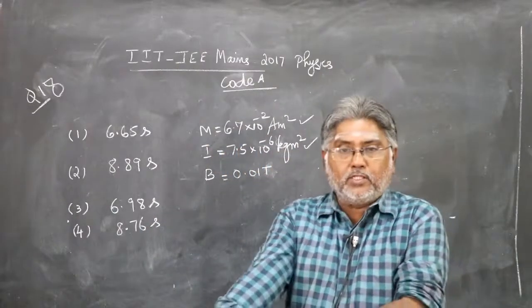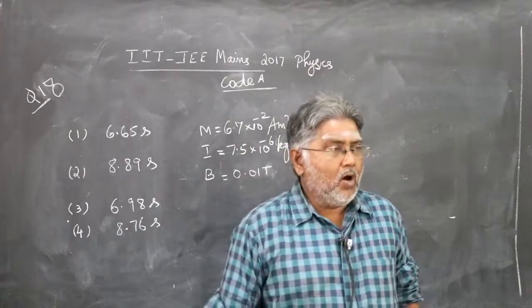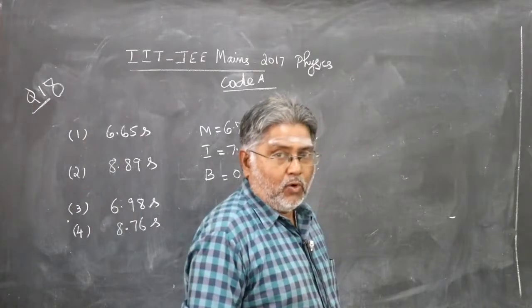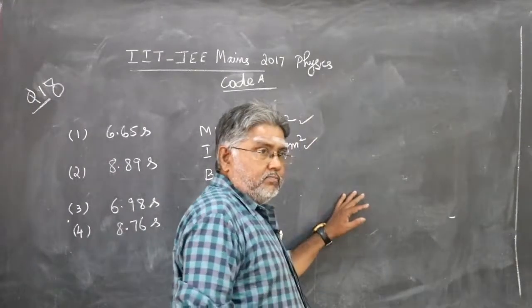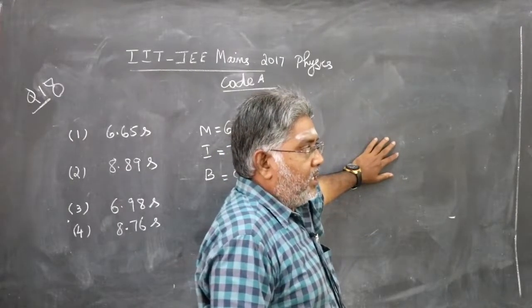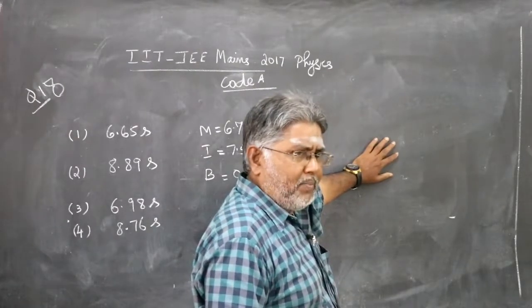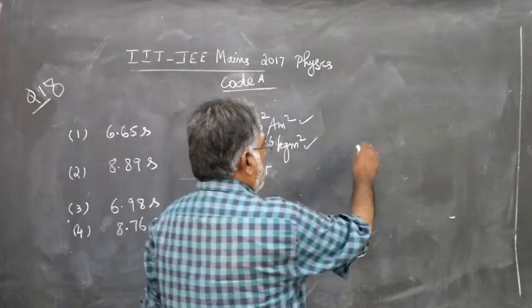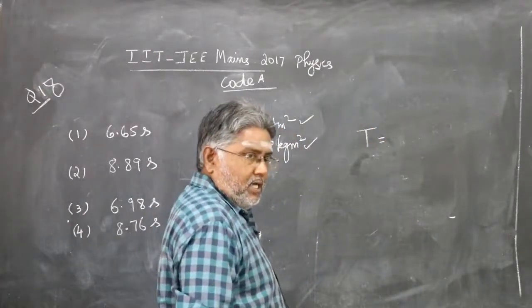How will you do that? This is a direct application of the formula for oscillations of a magnetic dipole in an external uniform magnetic field. It's a very common topic in 12th standard CBSE physics, so you can straight away apply the formula.